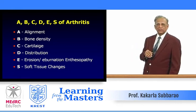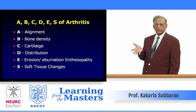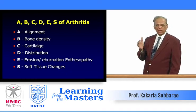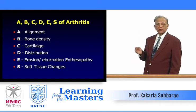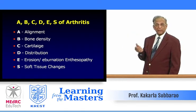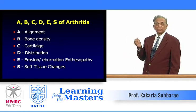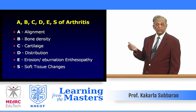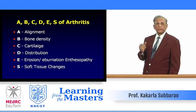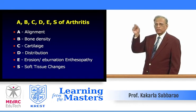Soft tissue changes must also be assessed. For the hip, the fat planes may be displaced or there may be localized soft tissue swelling. Consider soft tissue atrophy, as seen in hemiplegia. Look for calcification — synovial chondromatosis may cause calcification, and tuberculous abscesses may calcify in the soft tissue. One must carefully analyze all these parameters using the A, B, C, D, E, S mnemonic.